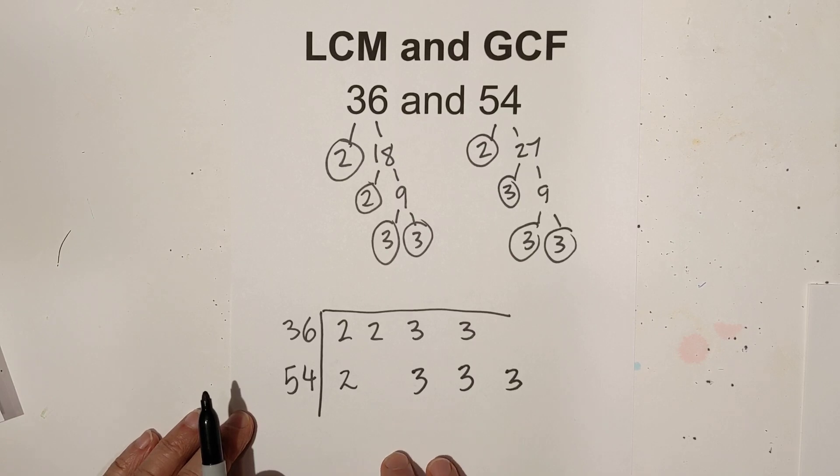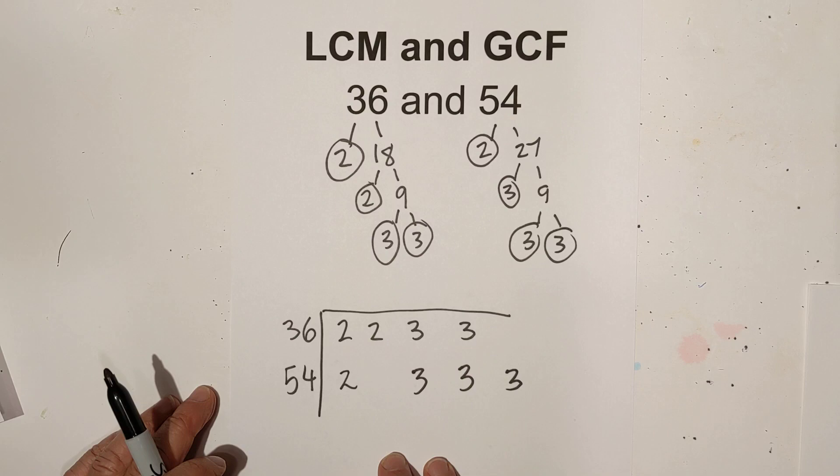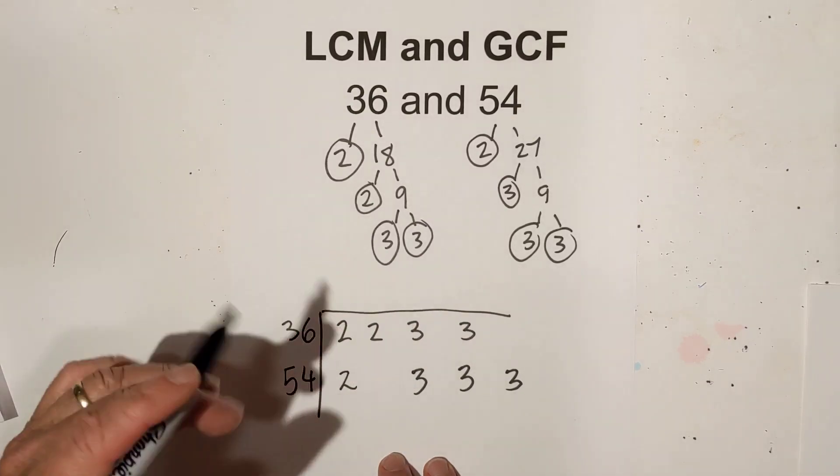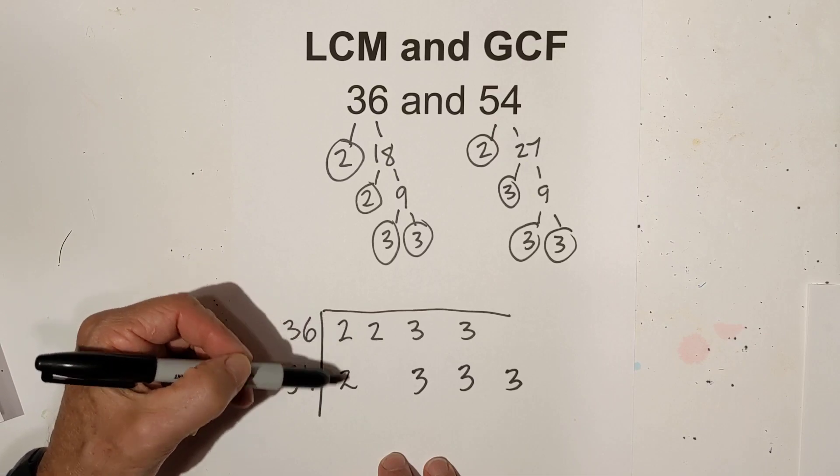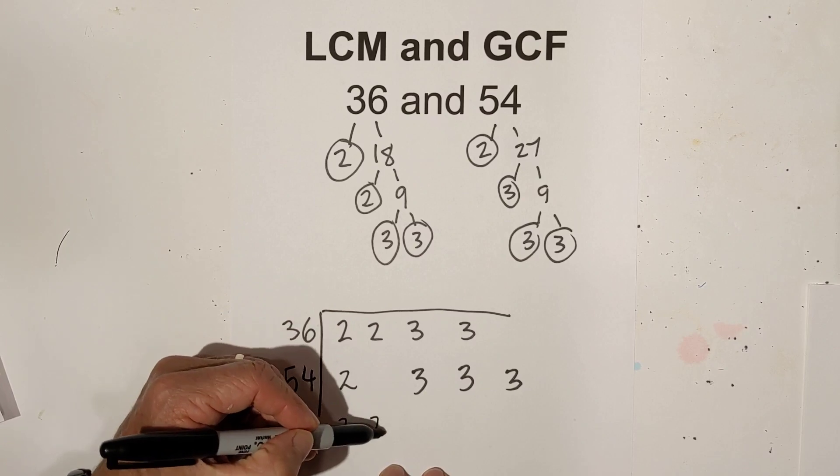For the least common multiple, which is the smallest number both numbers divide into evenly, I multiply all the prime numbers together but use this rule: if you have 2 in a column, you only bring down one number.